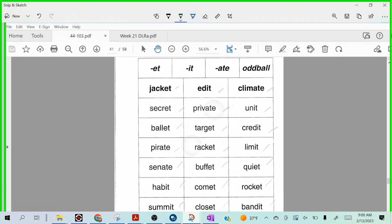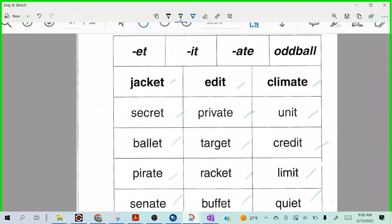All right. So did you guys see a couple of oddballs? Did you, Alexis? Good. So notice it all makes the 'it' sound no matter what, right? We don't say climate, we say climate, jacket, edit, secret, right? It all sounds like 'it', right? But they do have different endings, right? So let's take a look. Let's first create our key.